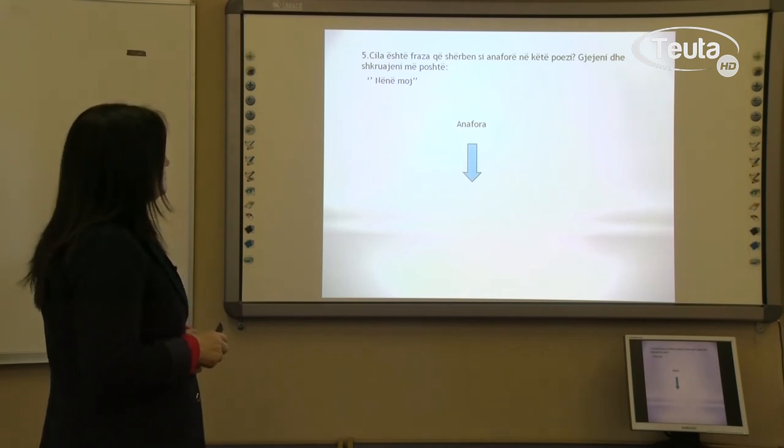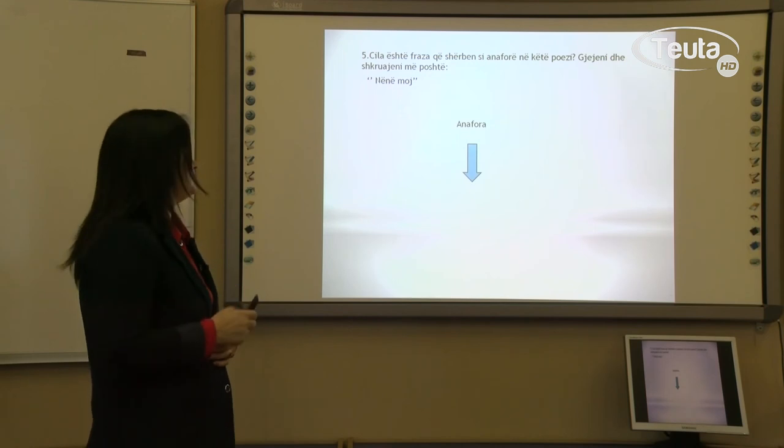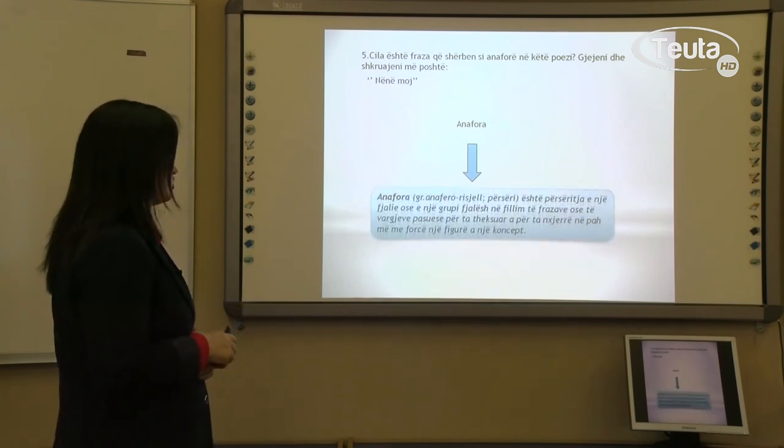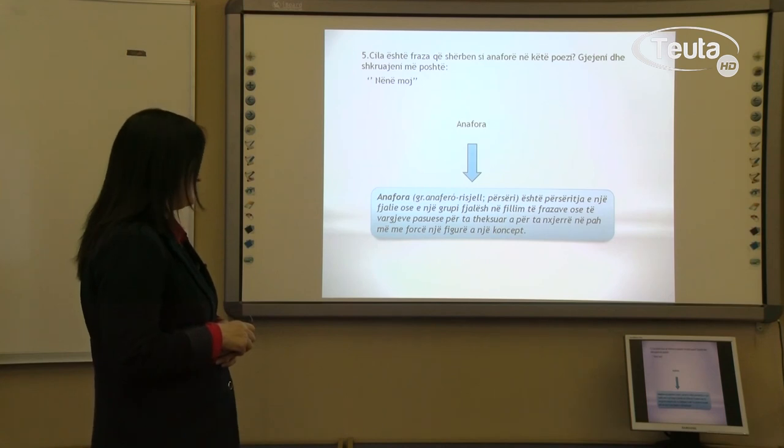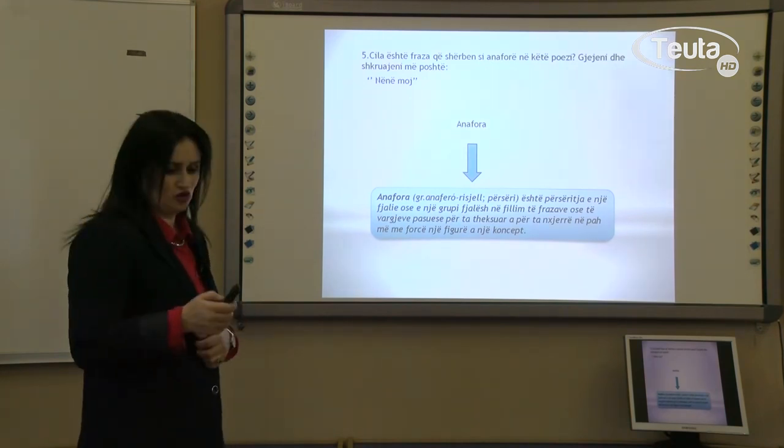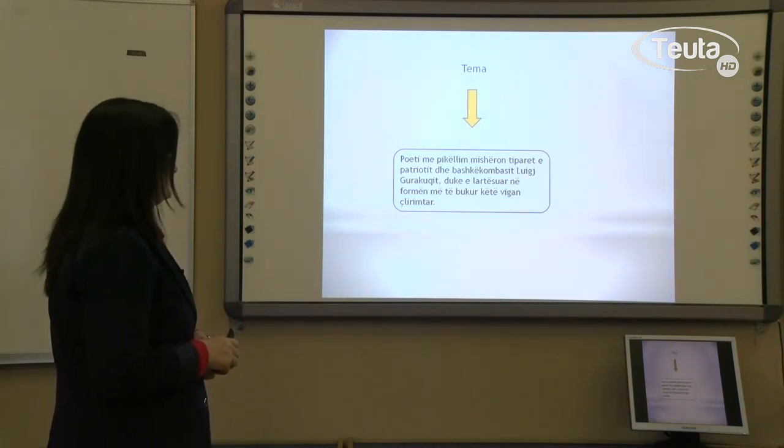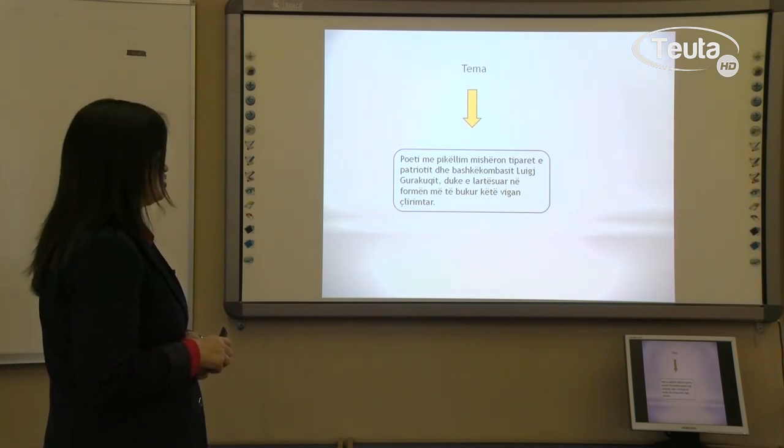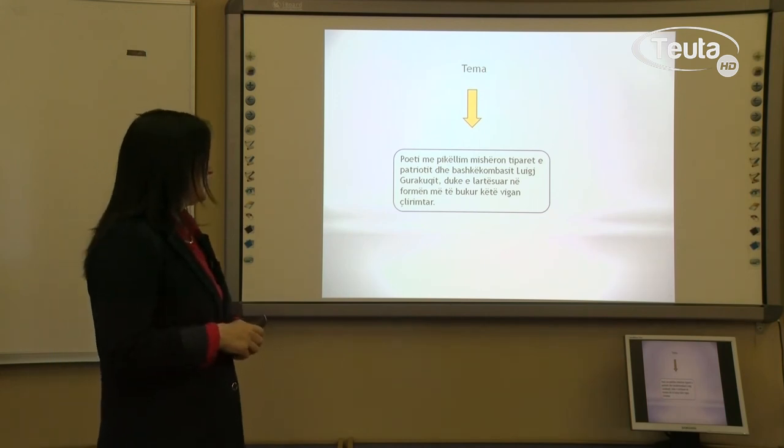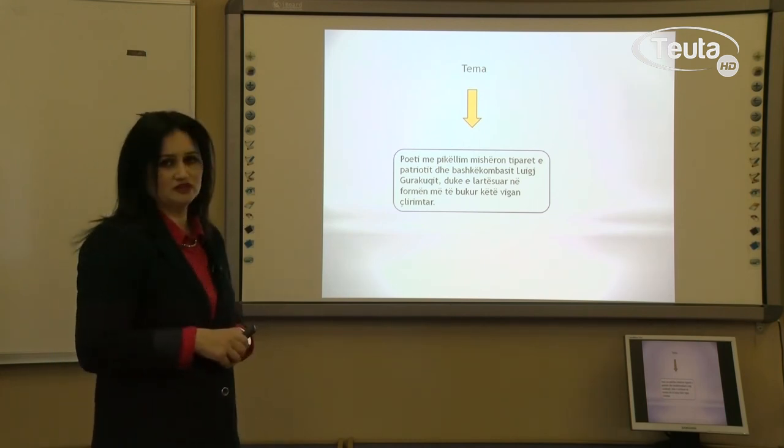Cila është fraza që shërben si anafor në këtë poezi? Gjeni dhe shkruani më poshtë. Pra fraza që shërben si anafor është nënë moj. Dhe tani do të shohim se çka është anafora. Anafora është përsëritja e një fjalie ose një grupi fjalësh në fillim të frazave ose të vargjave pasuese për të theksuar a për të ndezur në mend me forcë një figurë a një koncept. Po cila është tema e kësaj poezie? Poeti me pikëllim i kushtohet portretit të patriotit dhe bashkëkombasit Luigj Gurakuqi, duke lartësuar në formën më të bukur këtë vigan e lirëtarë.